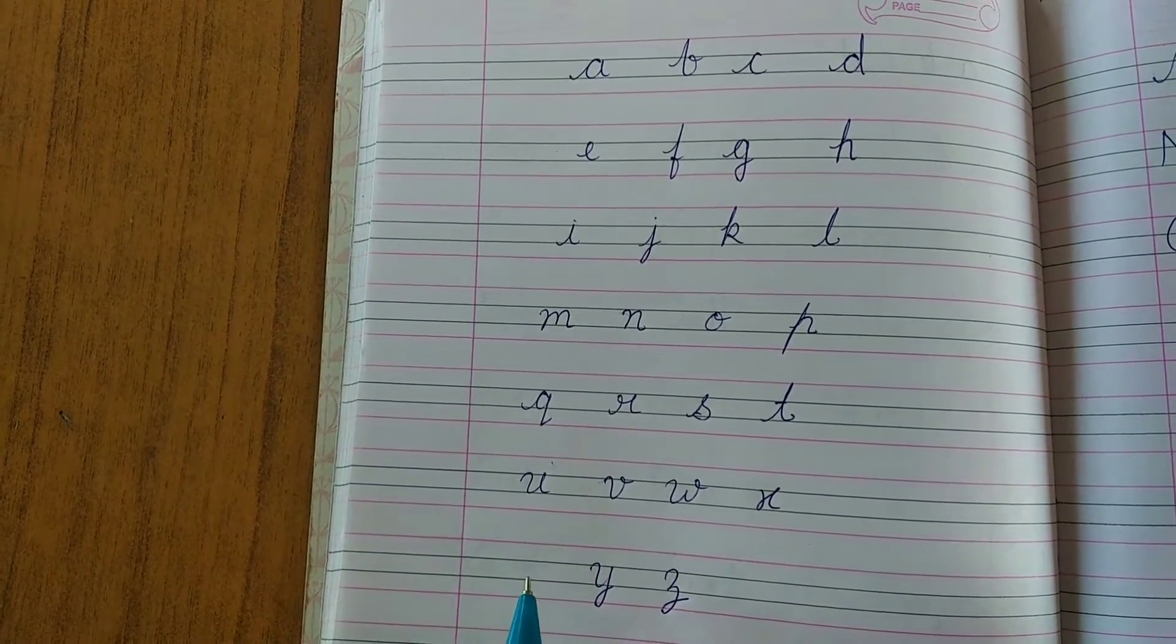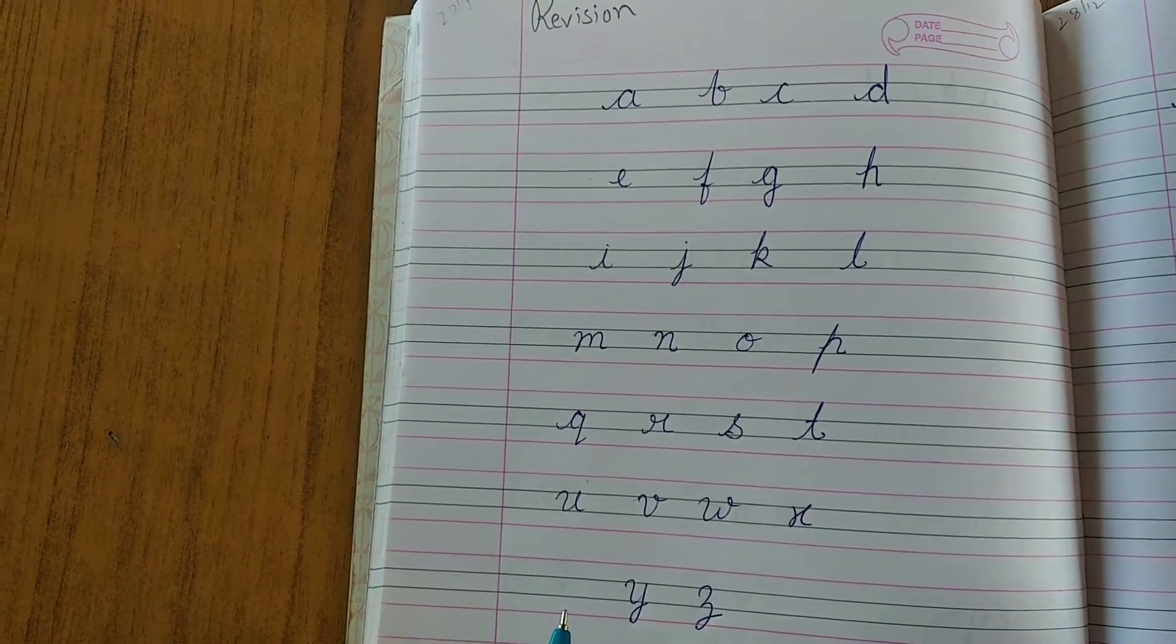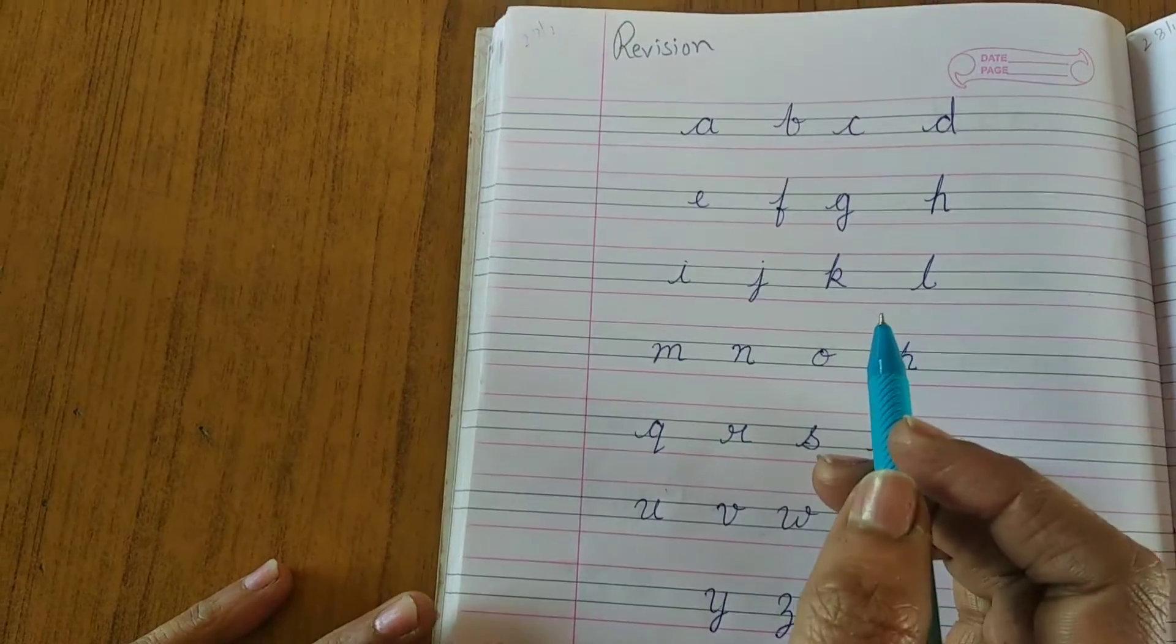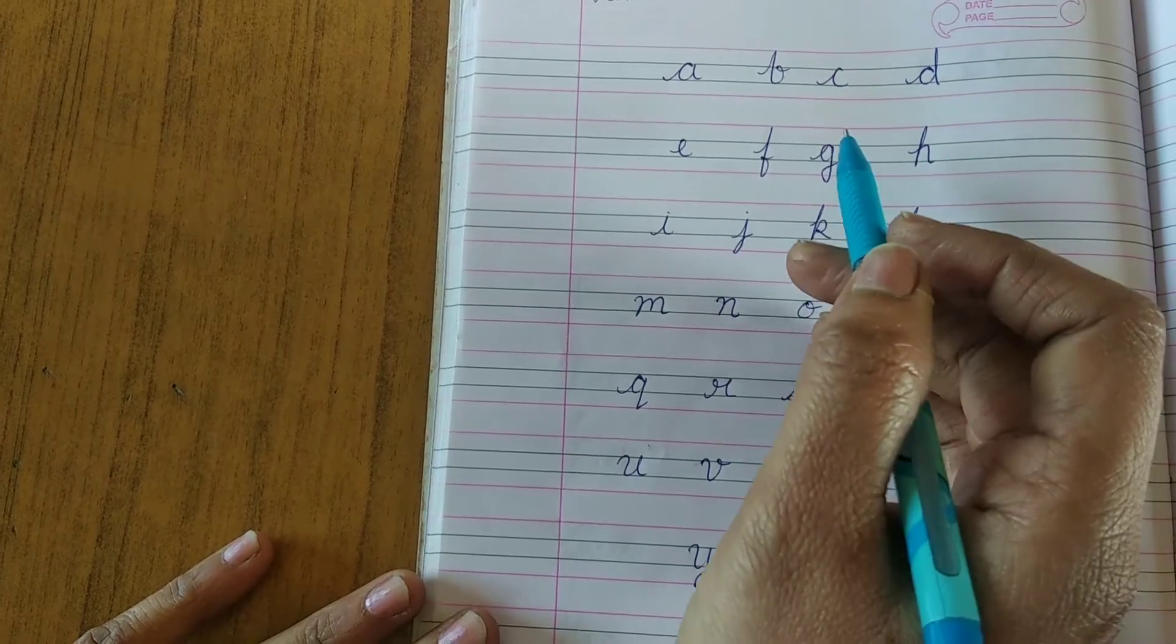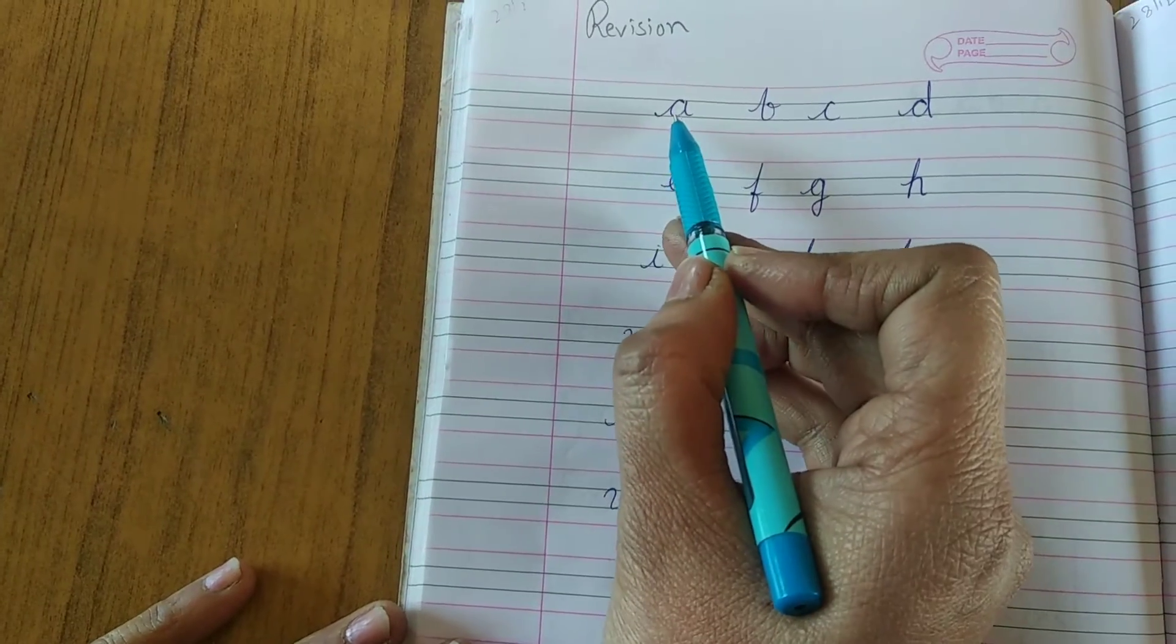Hello children, good morning. Today we have English subject. In English, we revise small cursive letters. You already learned but again we will revise. So identify.